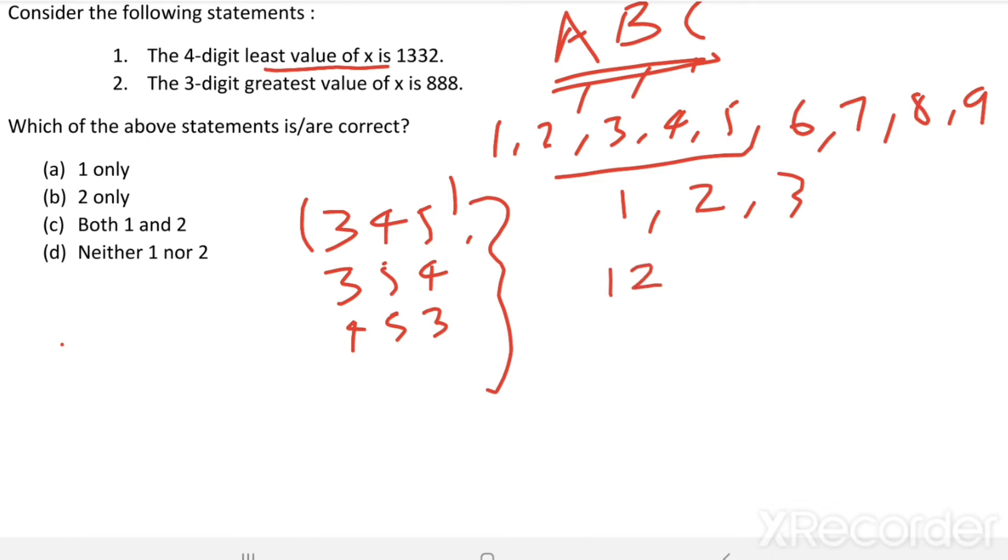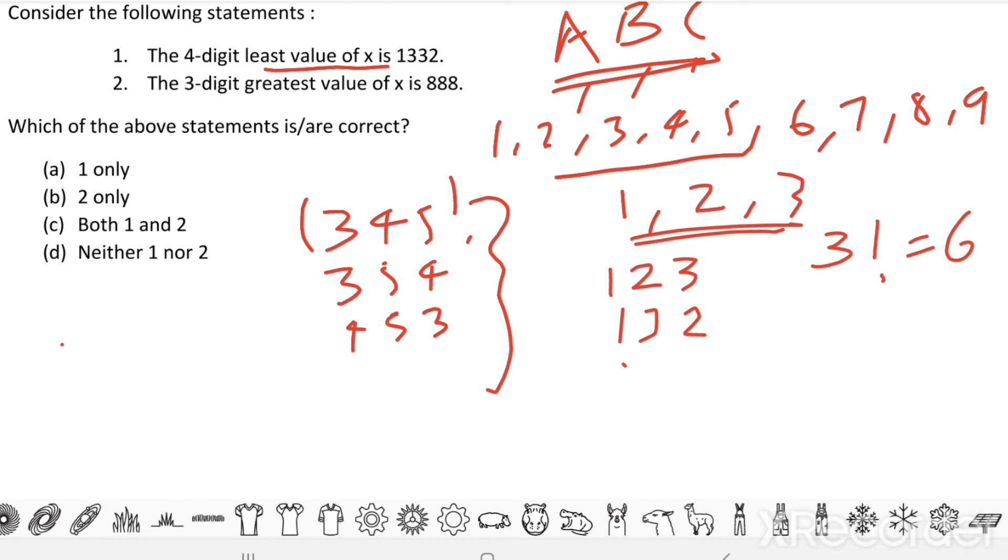So, using these 3 digits, how many 3-digit numbers are possible? Total 6 numbers are possible because total number of arrangements possible with these 3 digits are 3 factorial. 3 factorial equal to 6. So, let us write down all those 6 arrangements.